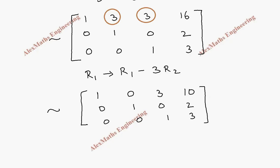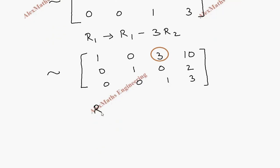Now we have to make this element as 0 to get the complete diagonal matrix. So once again, we are going to do for r1, but we are going to make use of r3.